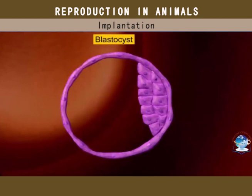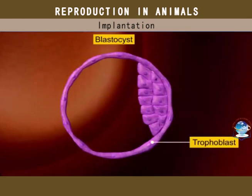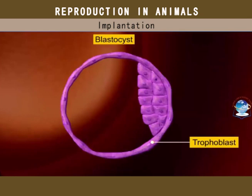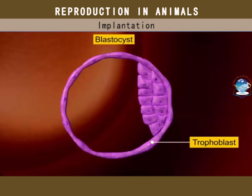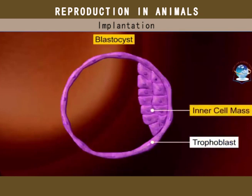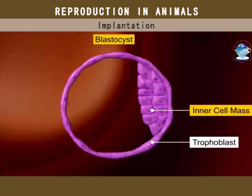The outer layer, the trophoblast, eventually forms the placenta, and the inner layer consisting of a group of cells called the inner cell mass eventually differentiates to form the embryo.